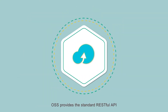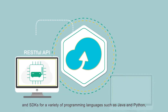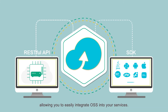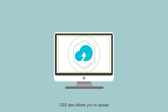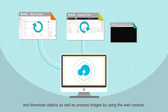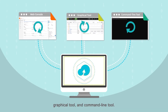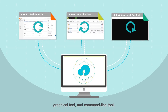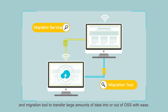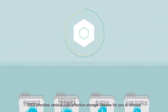OSS provides the standard RESTful API and SDKs for a variety of programming languages such as Java and Python, allowing you to easily integrate OSS into your services. OSS also allows you to upload and download objects, as well as process images by using the web console, graphical tool, and command line tool. You can also use the online migration service and migration tool to transfer large amounts of data into or out of OSS with ease.